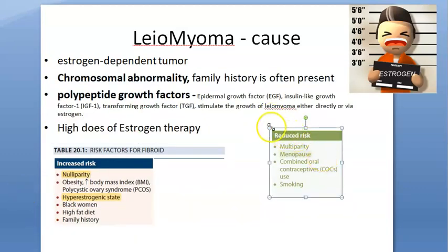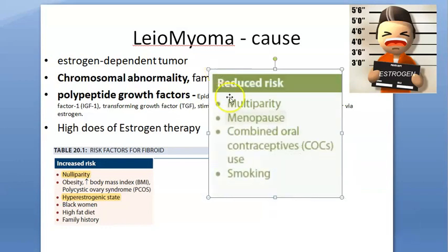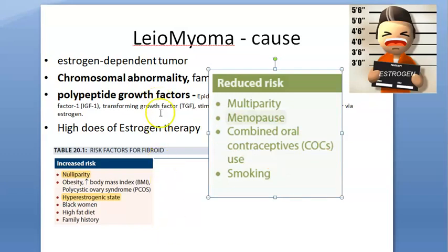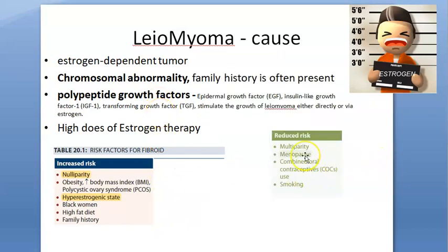Who won't have the risk of leiomyoma? Leiomyoma risk is reduced in people who have gone through menopause — because menopause is a low estrogen state. Combined oral contraceptive pills, which contain both estrogen and progesterone combined, mean they won't have only the estrogen effect. Multiparity is also protective — if you have given birth many times, you have a break from estrogen.